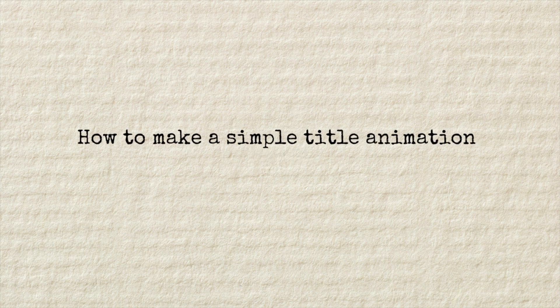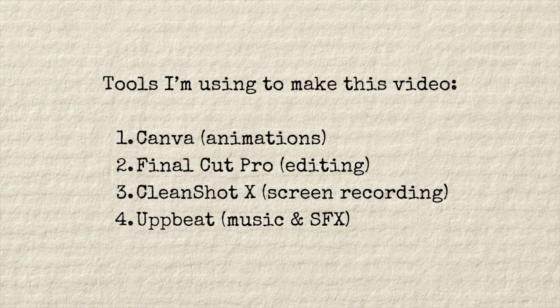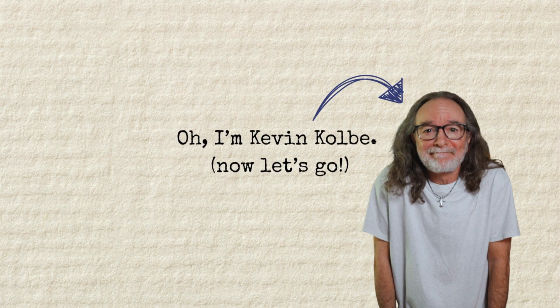How to make a simple title animation like this. The tools I'll use for this video will be Canva for the animations, Final Cut Pro for the editing, Clean Shot X for the screen recording, and Upbeat for music and sound effects. I'm Kevin Colby.